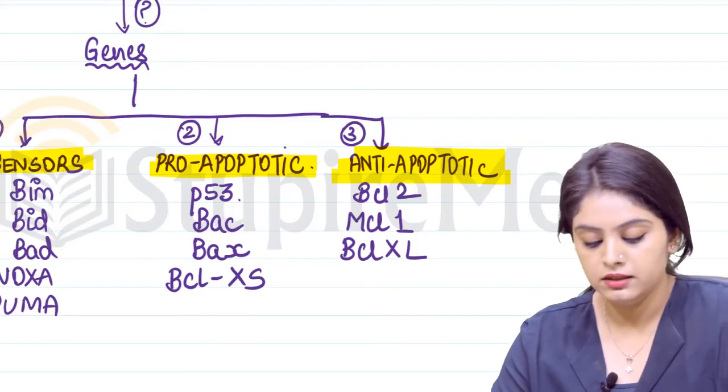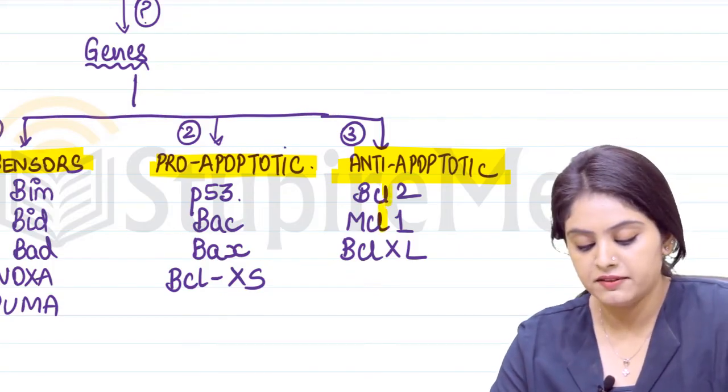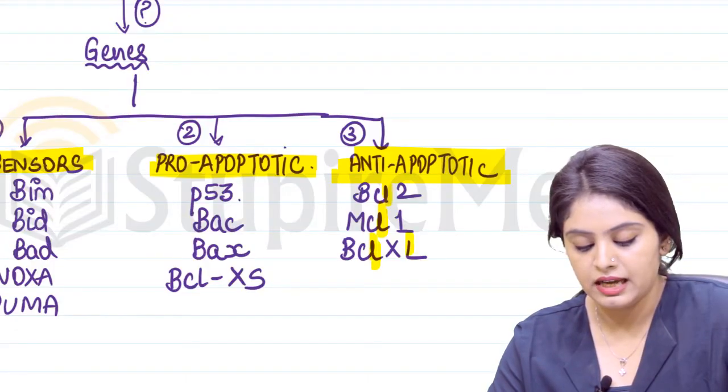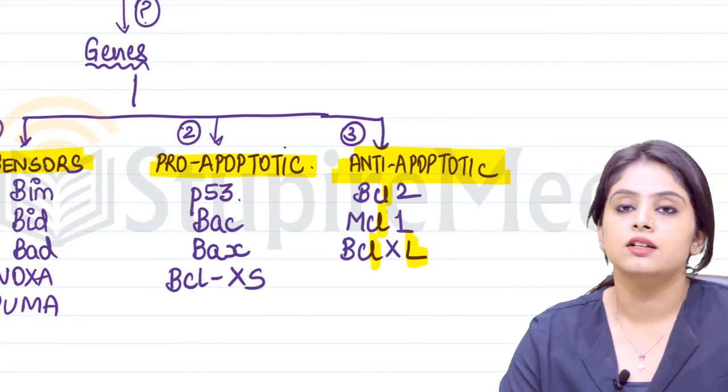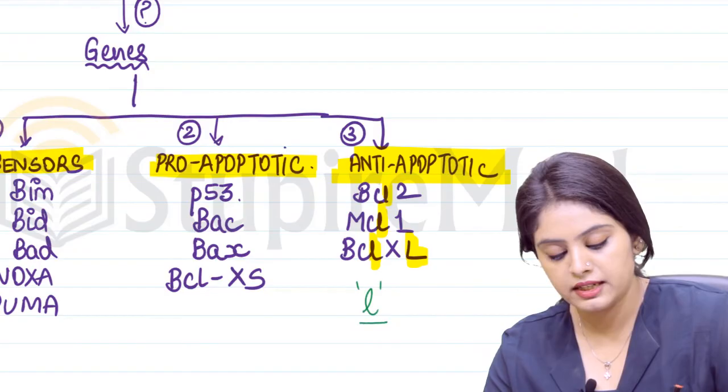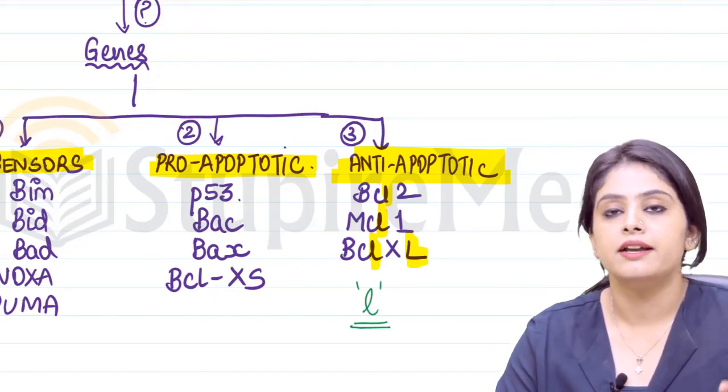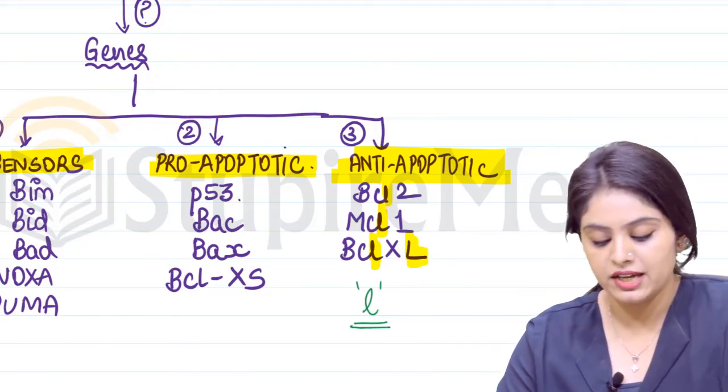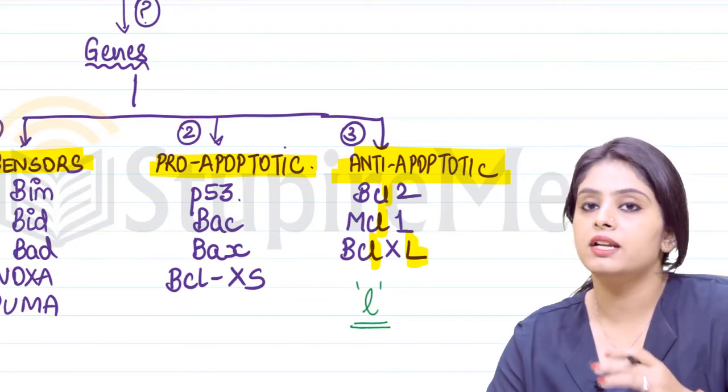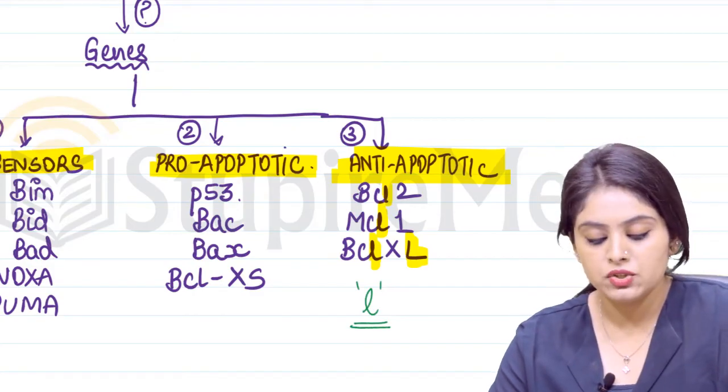Just focus on the anti-apoptotic category. BCL-2 has L, MCL-1 has L, BCL-XL has these two L's. How you can remember this is everything in the option that has the letter L will be anti-apoptotic.